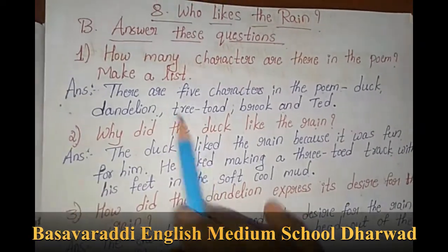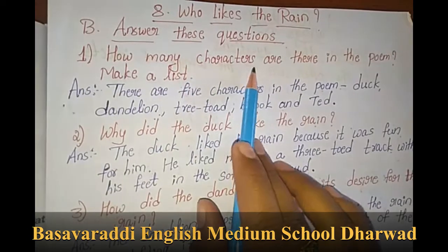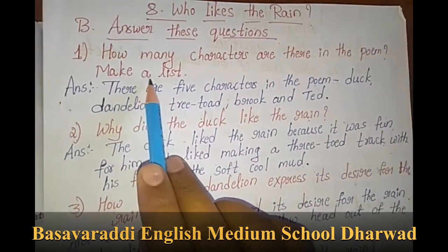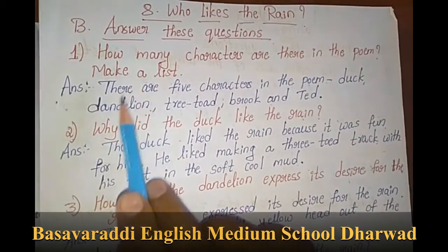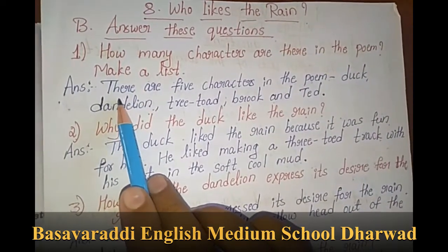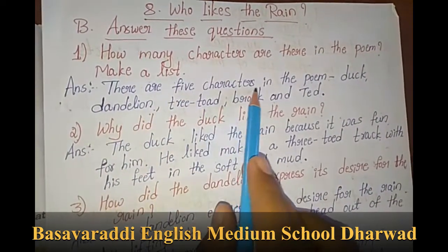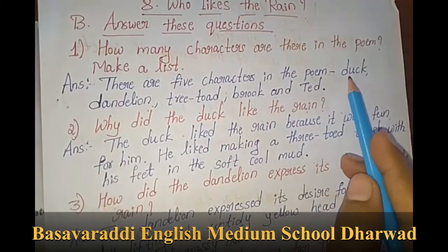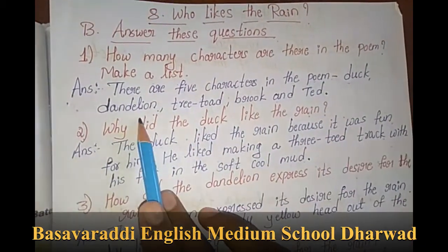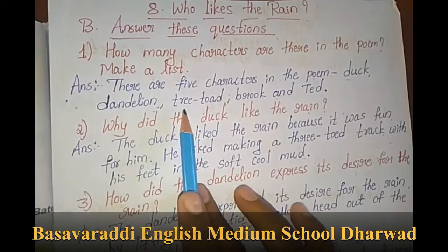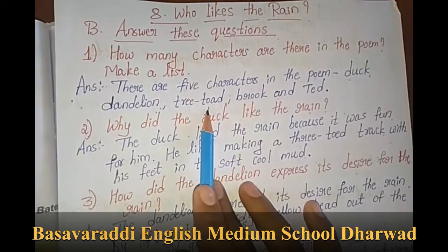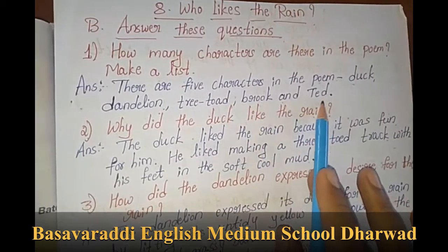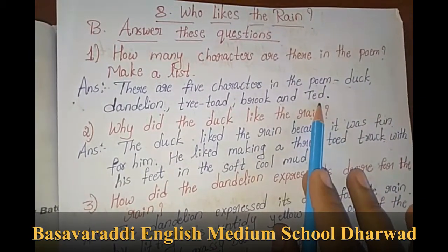Move on to answer these questions. First question: how many characters are there in the poem? Make a list. There are five characters in the poem — those are Duck, Dandelion (means flower), Tree-toad (means frog), Brook (means river), and Ted (means child).